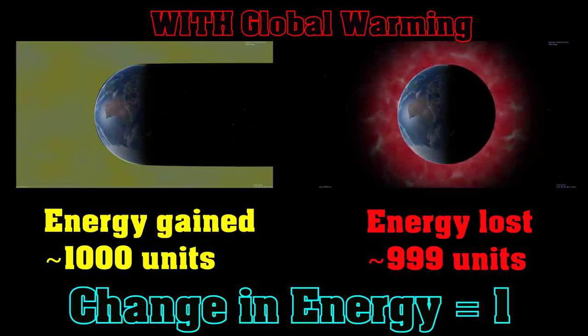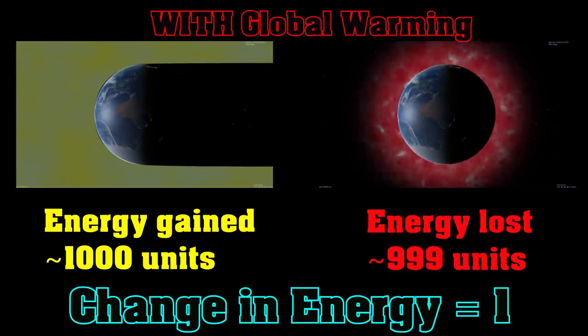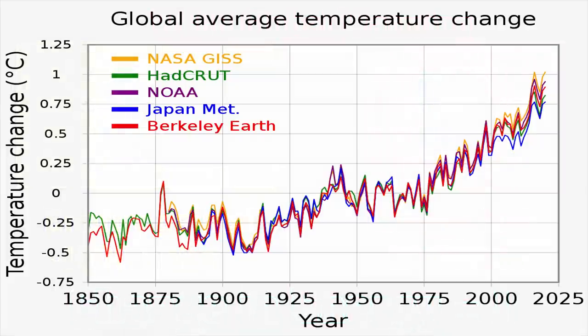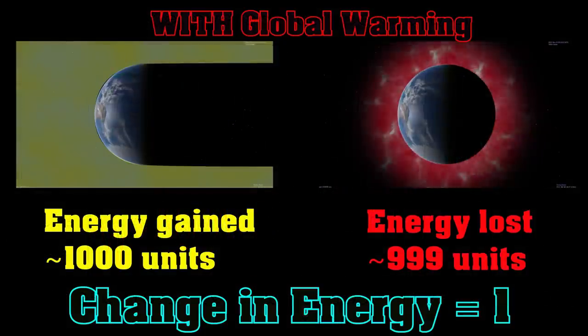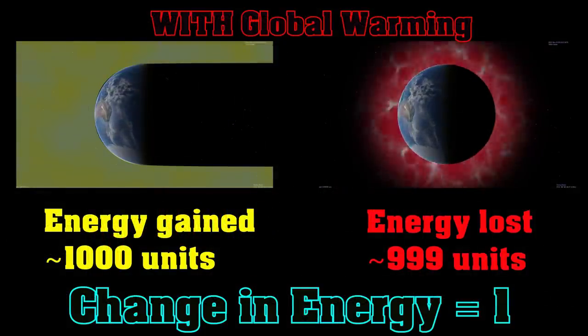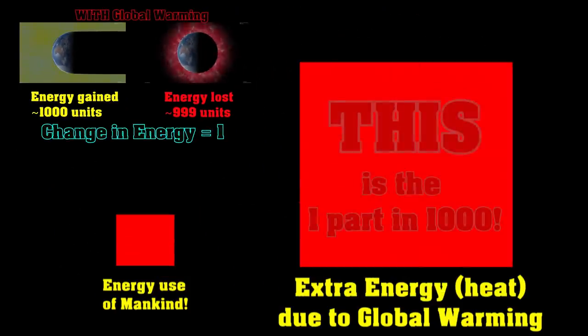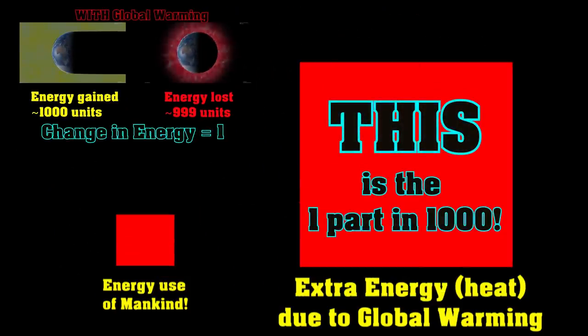At which point you might say, well, one part in a thousand? That's barely detectable. That's it? That's global warming? Well, yeah. But you've also got to bear in mind, it took the best part of 50 years to heat the planet up by about one degree Celsius. And you've also got to bear in mind that, you know, planetary, that one part in a thousand extra energy absorbed by the Earth is ten times the entire energy production of mankind.